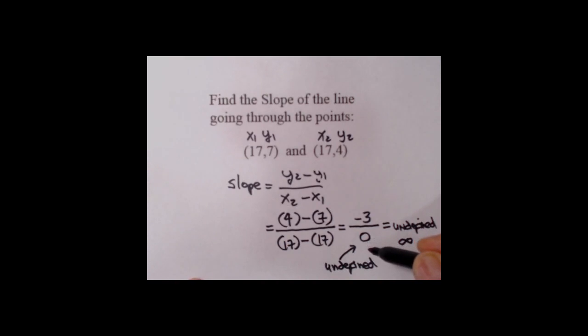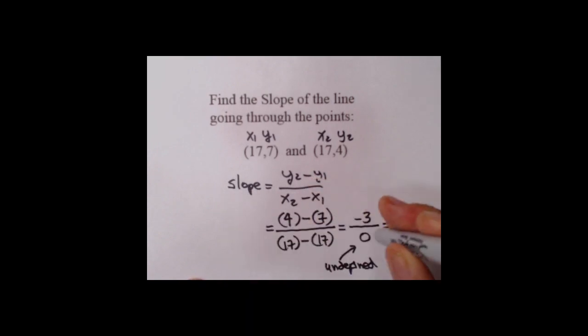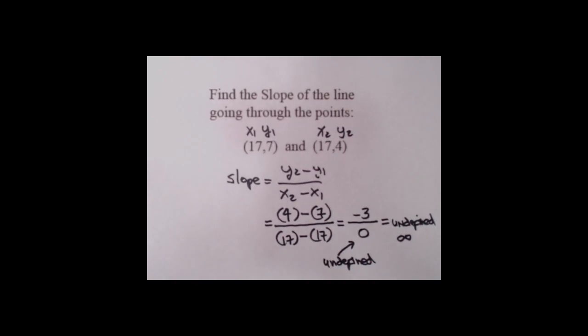You can also have a case where the Y values are the same, and that would be a flat line. The 0 would be upstairs, and you'd have some number other than 0 down. All the standard things we've talked about can happen here when you have two points. Just remember, if you get a 0 downstairs, that means the graph line is vertical and the slope is undefined.